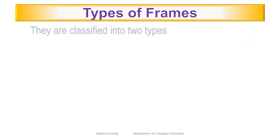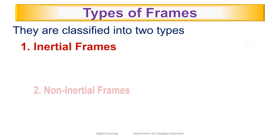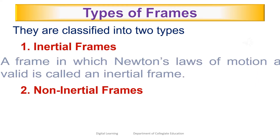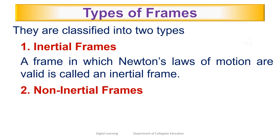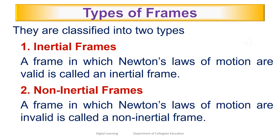Frames of reference are classified into two types: inertial frames and non-inertial frames. A frame in which Newton's laws of motion are valid is called an inertial frame. A frame in which Newton's laws of motion are invalid is called a non-inertial frame.